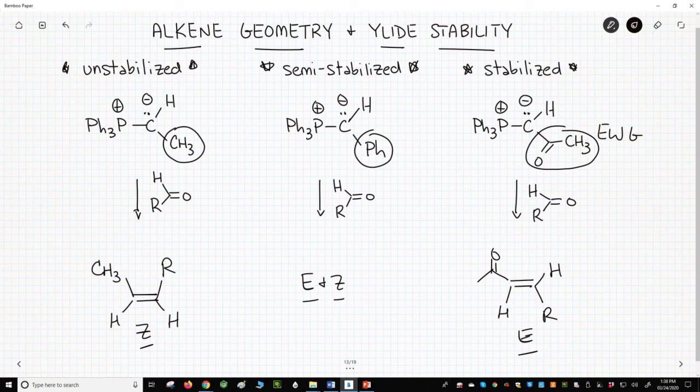So the alkene geometry is determined not by the stability of the product, but the stability of the Wittig reagent. This prediction method only works with disubstituted alkene products, like the ones in these reactions. If the alkene product has three R groups, the geometry is normally a non-selective mixture of E and Z. So this is how we can predict alkene geometry in Wittig reactions.